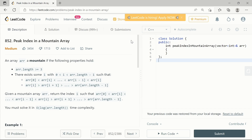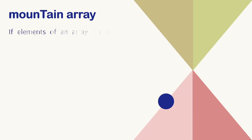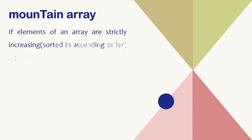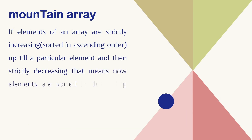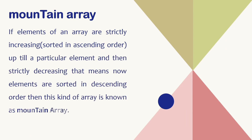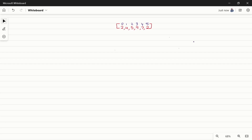To describe a mountain array: if the elements of an array are strictly increasing, or sorted in ascending order, up till a particular element and then strictly decreasing — meaning the elements are now sorted in descending order — then this kind of array is known as a mountain array.